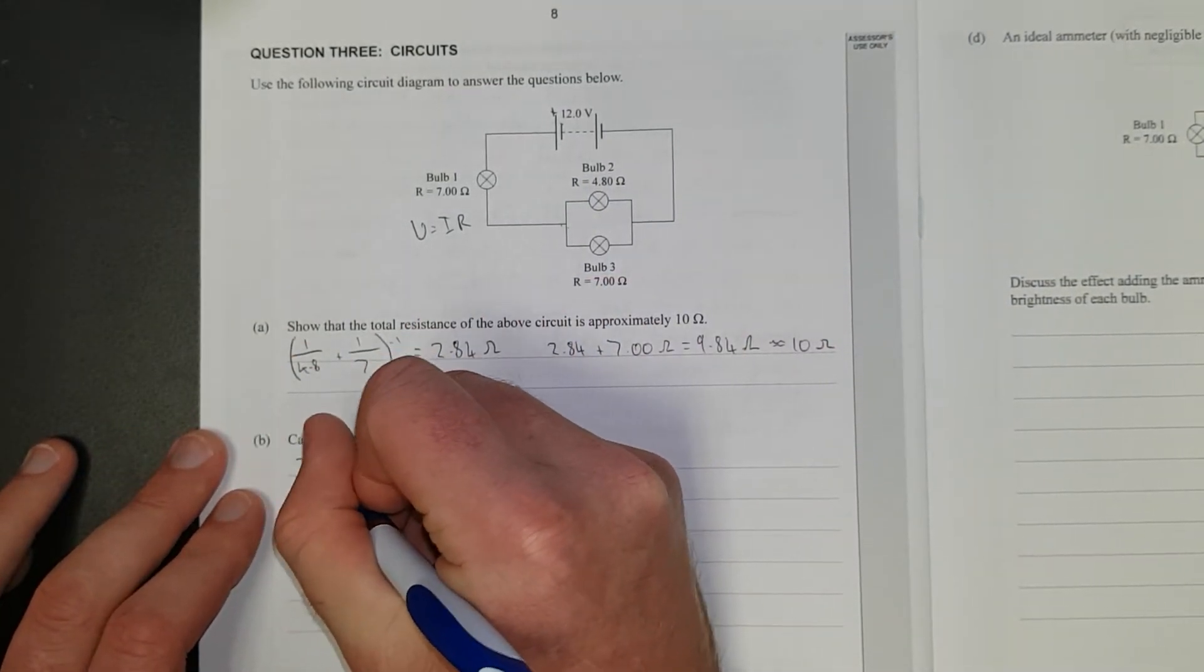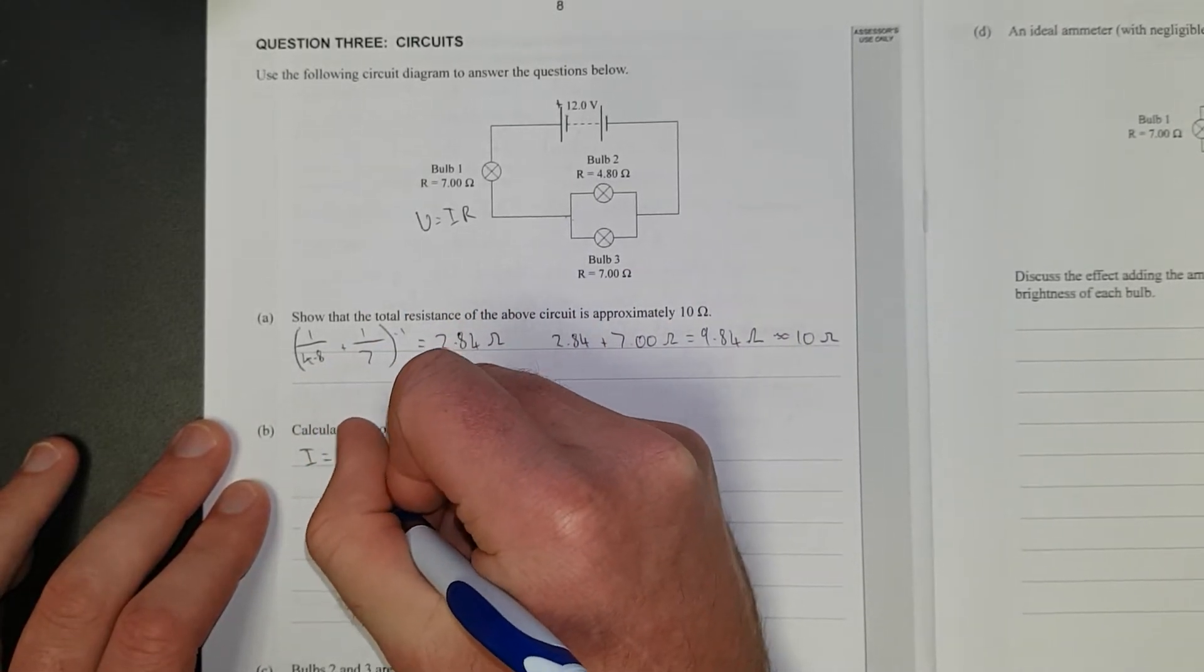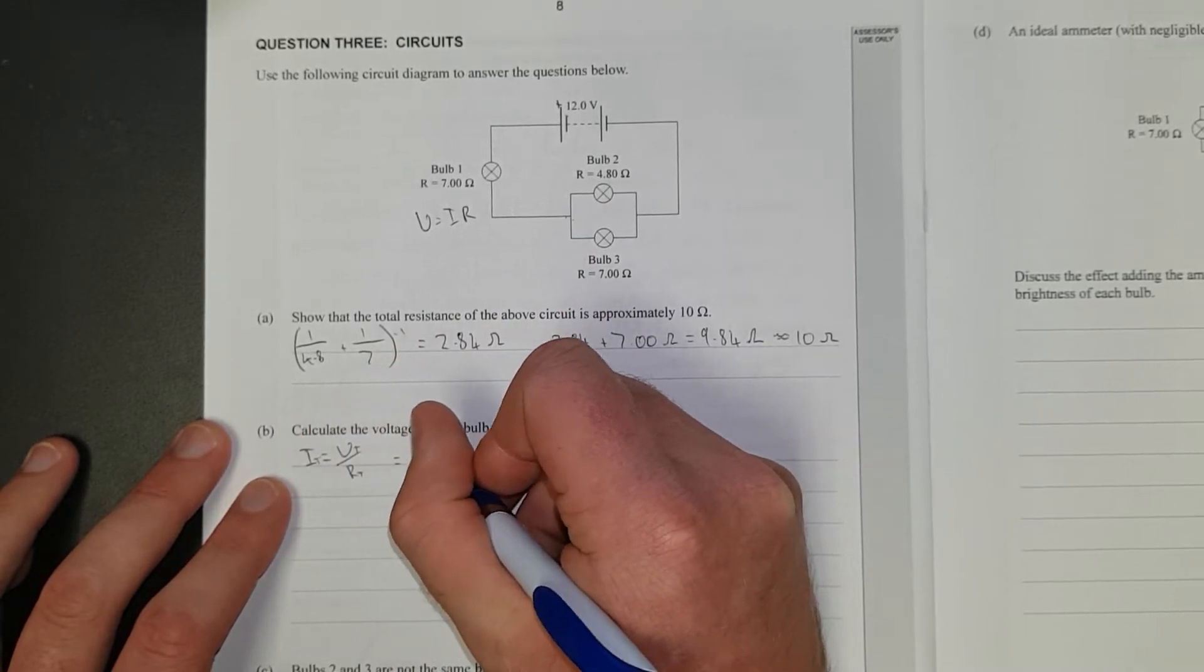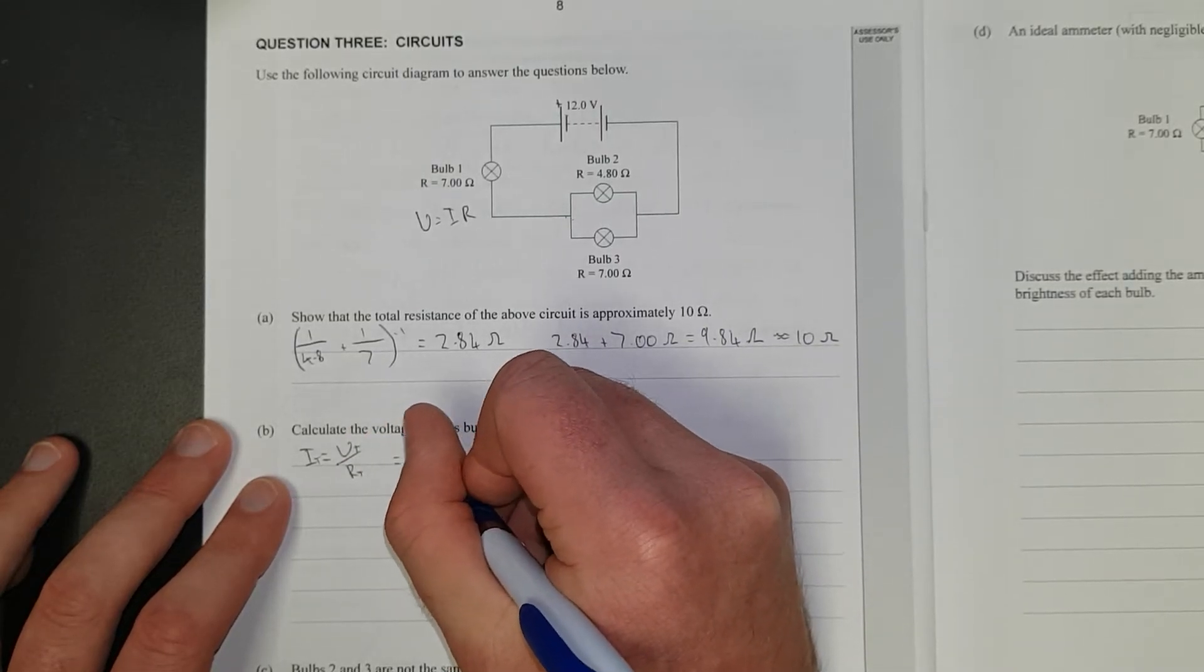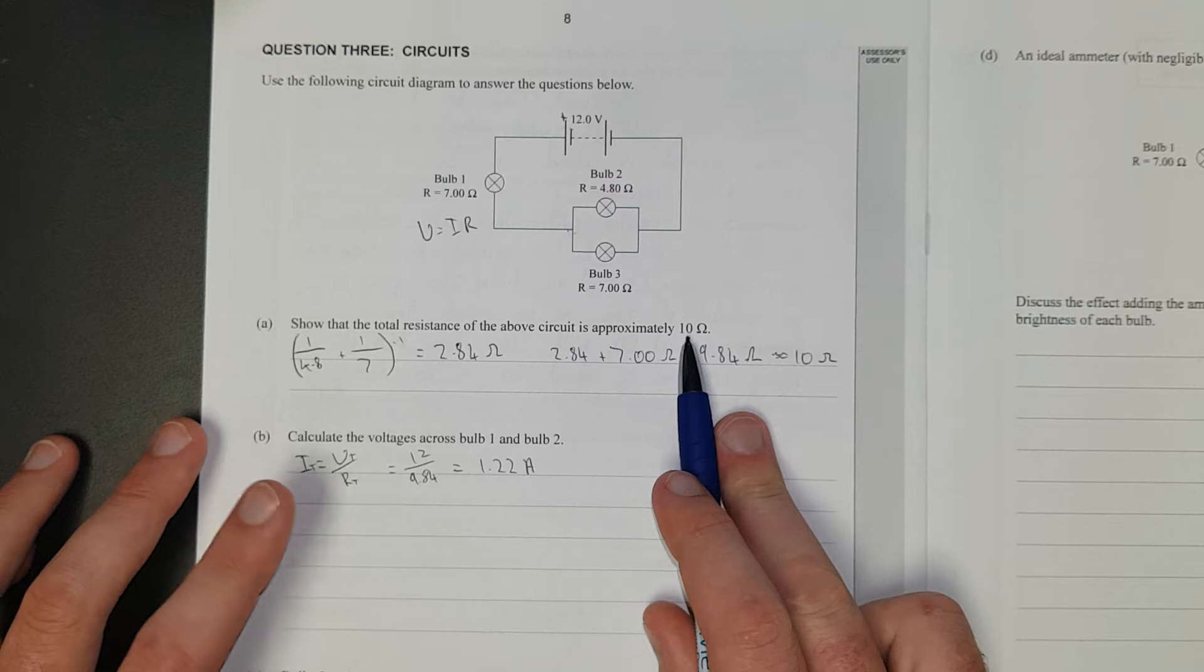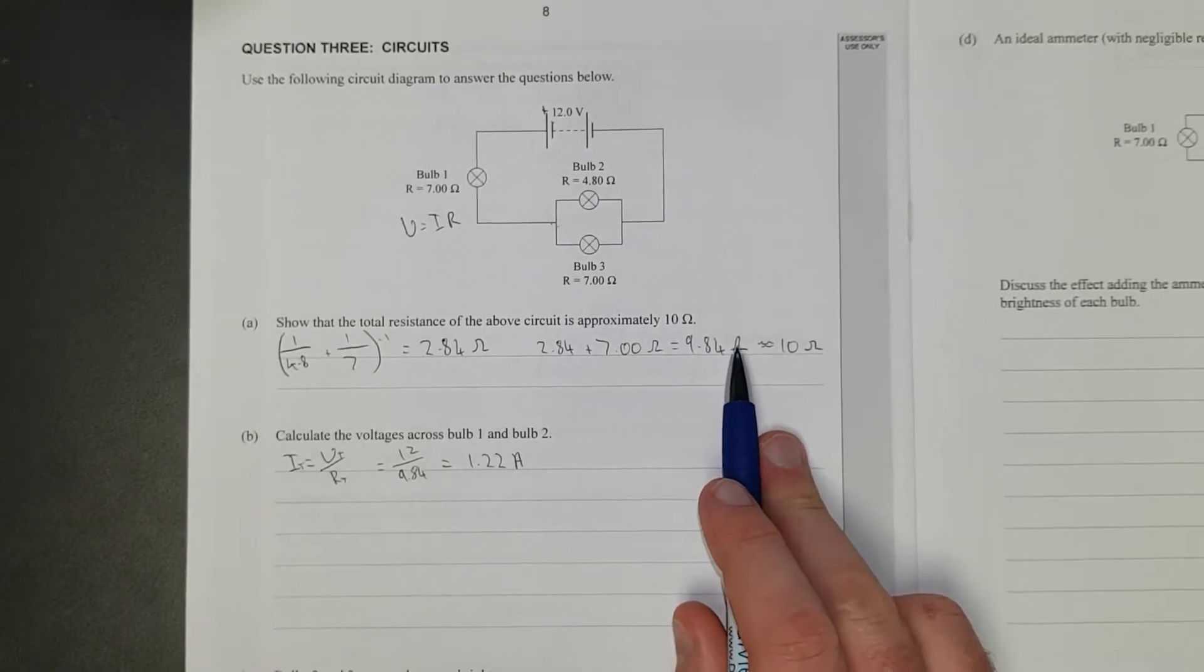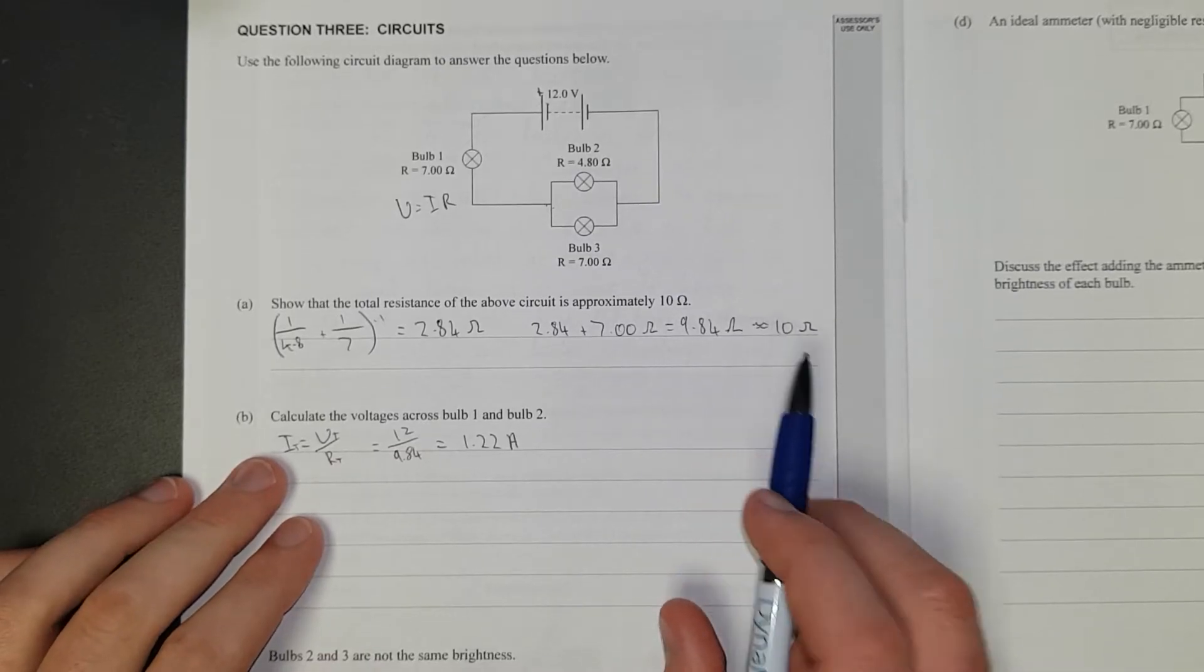Right, let's work some stuff out. The current is going to be equal to the total voltage divided by the total resistance. Current total is going to be equal to 12 divided by 9.84, and that is going to give me 1.22 amps. If you use 10, it's kind of going to screw you up a little bit. I'm a bit annoyed about this, it's so far off. It's not even close to 10. It's like 0.2, okay, 0.15 ohms off. Whatever.